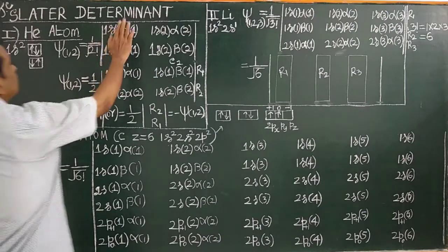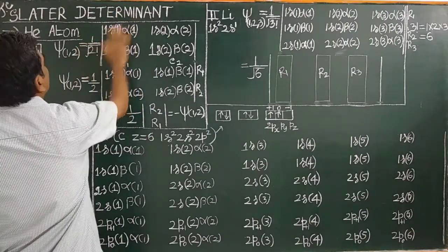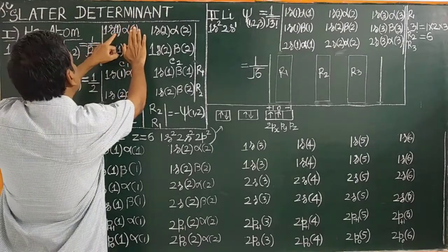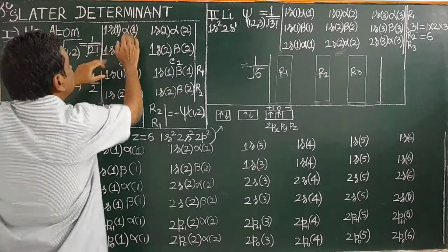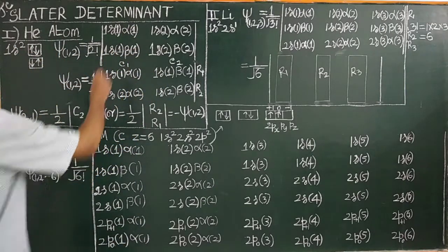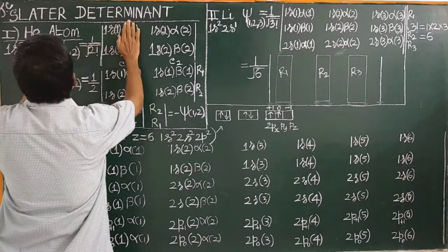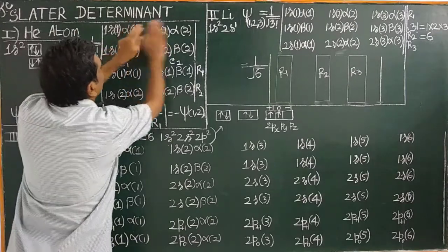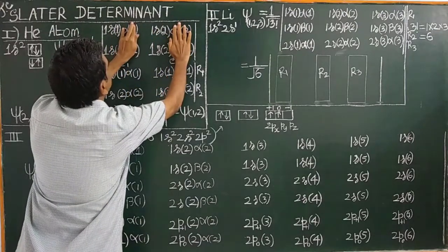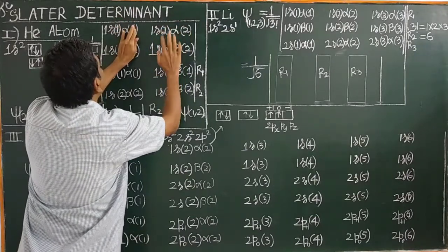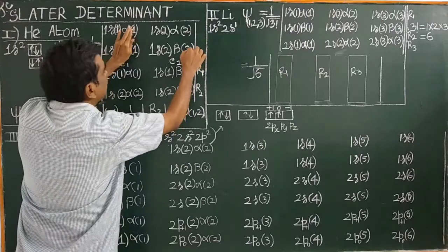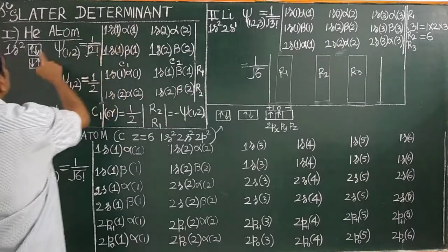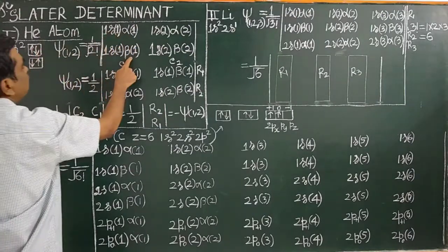How is it written? It is very simple. For example, you have two electrons. The electrons are indistinguishable, therefore you write: one has one, one has one for two electrons. For another electron, one has two, similarly one has two, one has three. You have alpha spin and another one is beta spin.